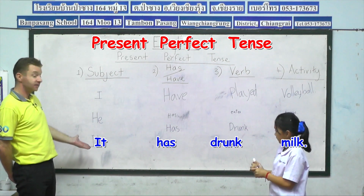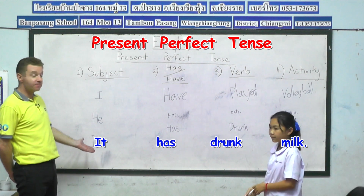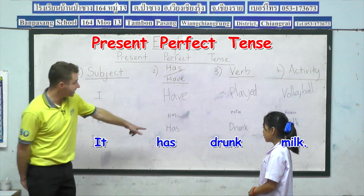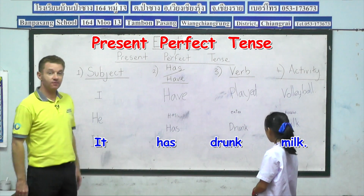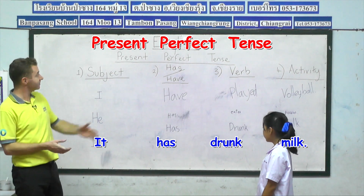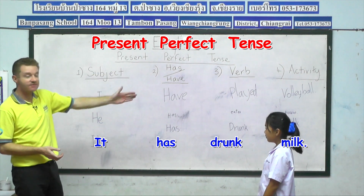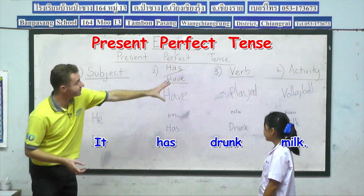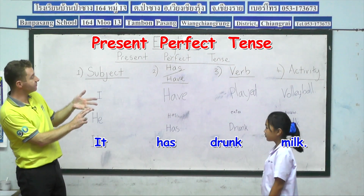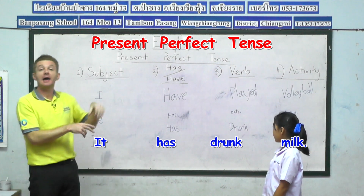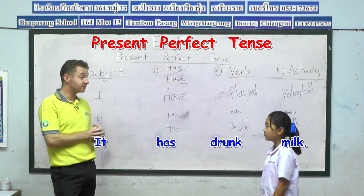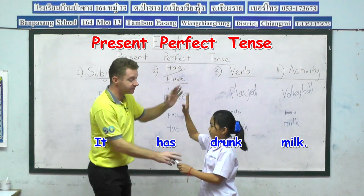So you can see we can even talk about animals and pets. Ready Nadia? It has drunk milk. An affirmative or positive sentence in the present perfect tense, always following the same structure: subject, has or have, the verb word, and then the activity or the complement. Nadia, that was excellent. Big round of applause for Nadia please guys.